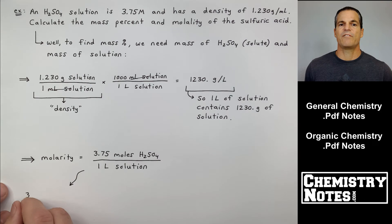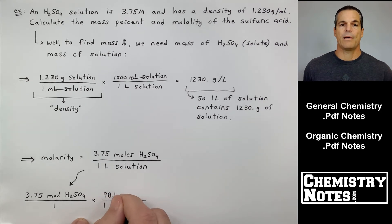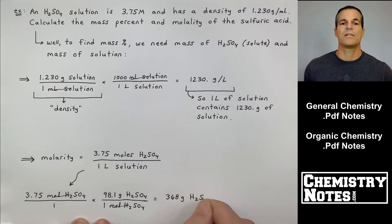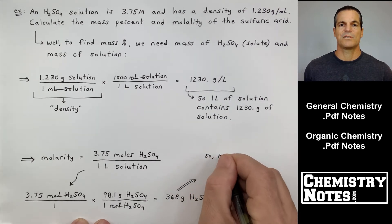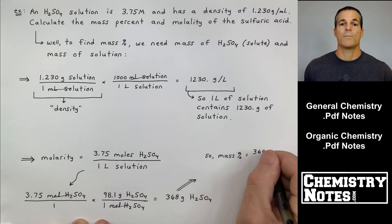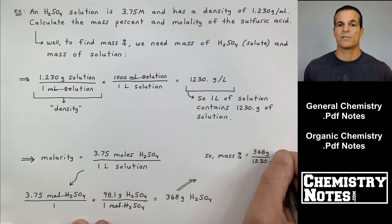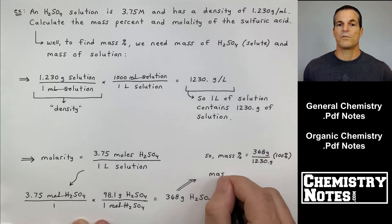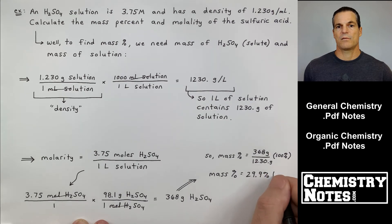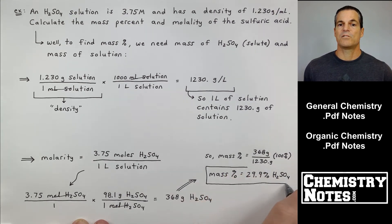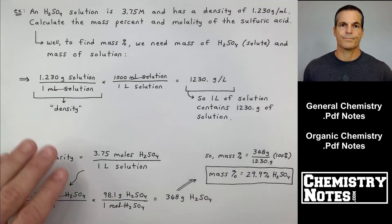So molarity is 3.75 moles of H2SO4 per one liter solution. Since I know the identity of the solute H2SO4, I can use the periodic table. I can add up two H's, one S, four oxygens to get the molar mass, and I convert 3.75 moles into grams, 368 grams of H2SO4. So my mass percent is 368 grams of H2SO4 divided by 1,230 grams of the solution times 100%. So my mass percent of H2SO4 is 29.9%.